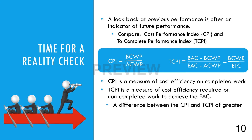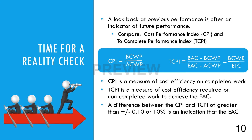A significant difference between the CPI and TCPI does not necessarily mean that an EAC is incorrect and must be changed, nor is the lack of difference a sure sign that the EAC remains valid. However, a difference is an indication that an EAC should be reviewed for realism. If, despite the difference, the decision is made not to update the EAC, then a logical and valid justification should be documented. Simply stating that there will be future efficiencies or that performance will improve is insufficient justification.